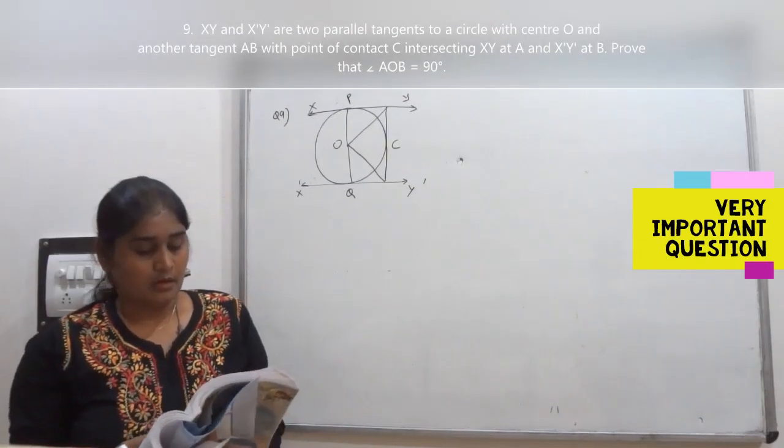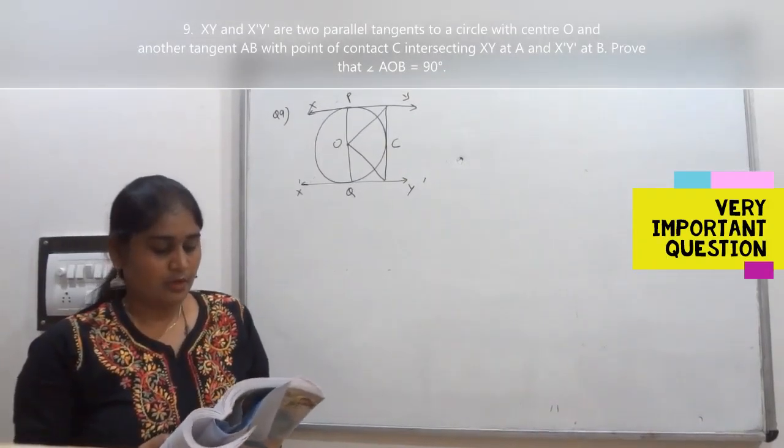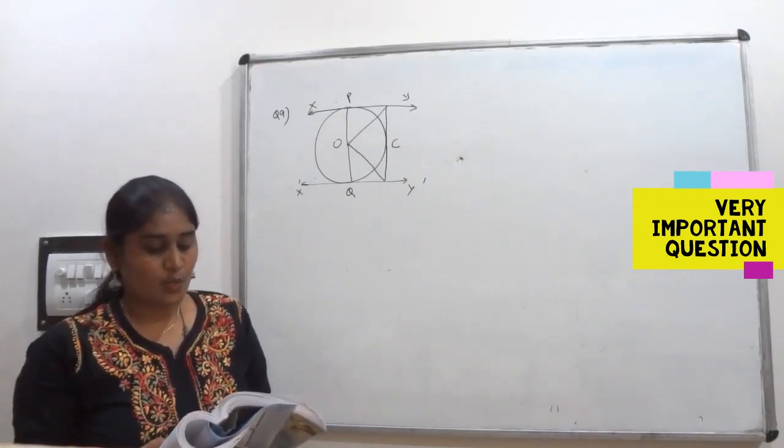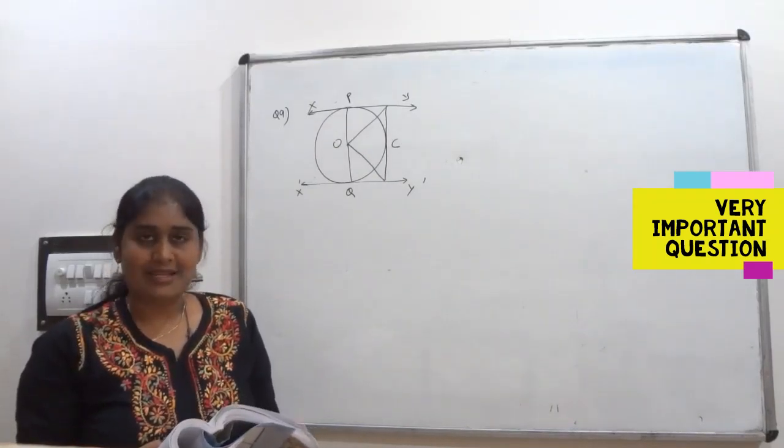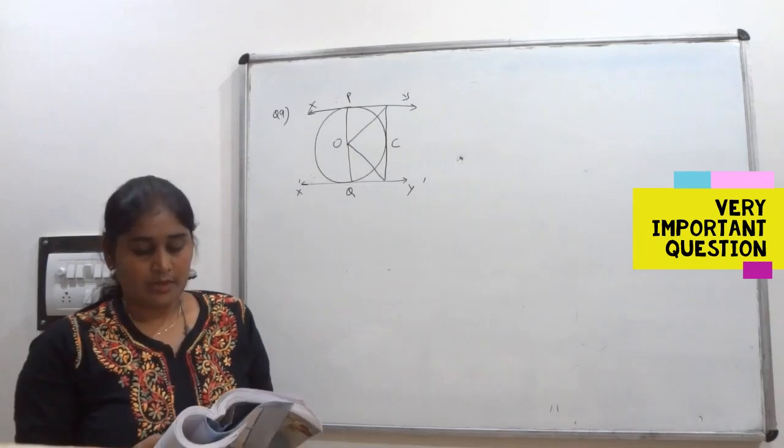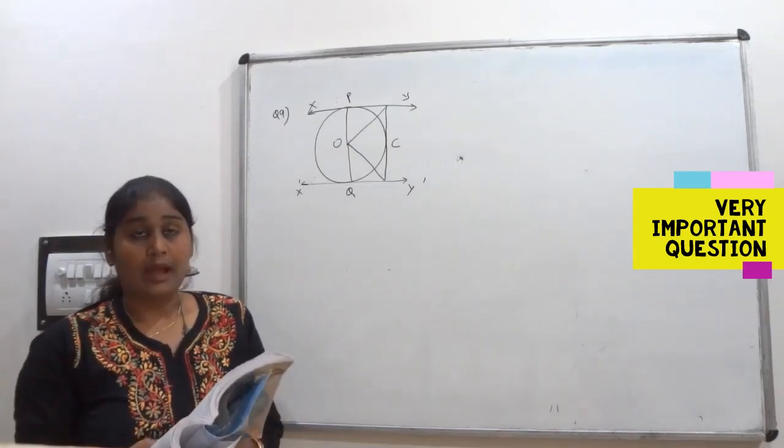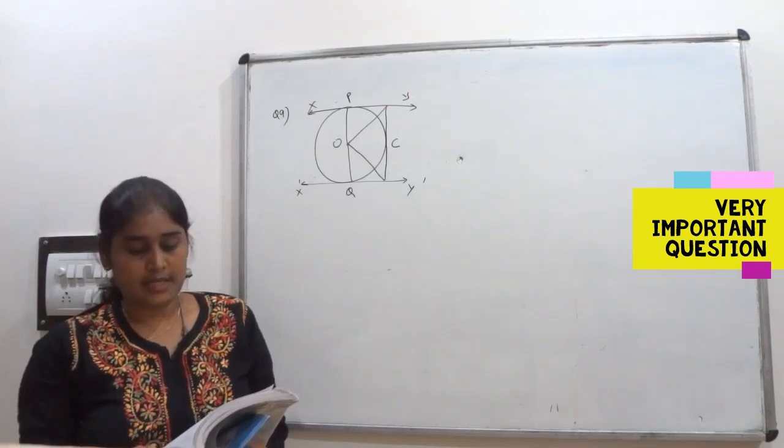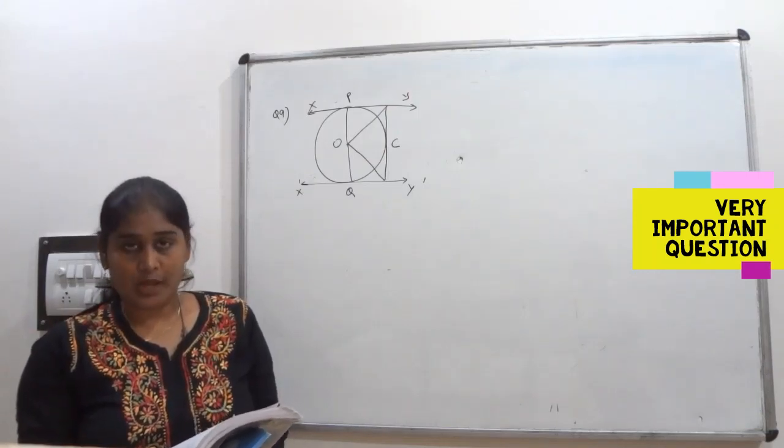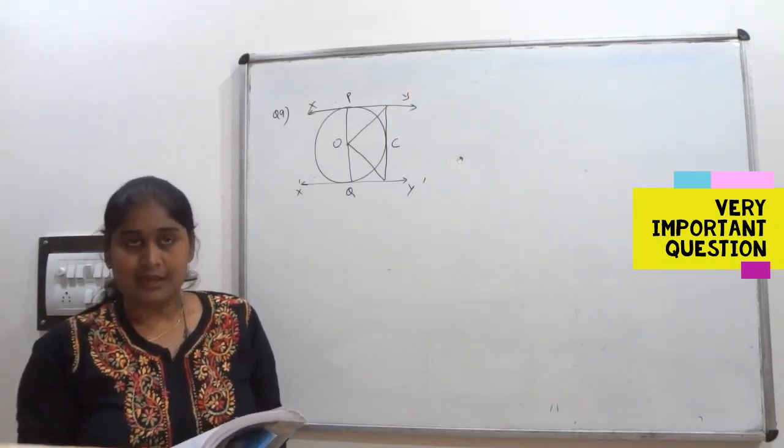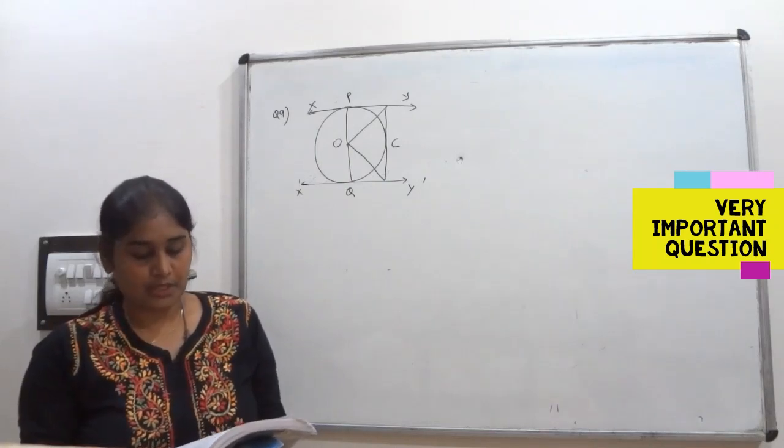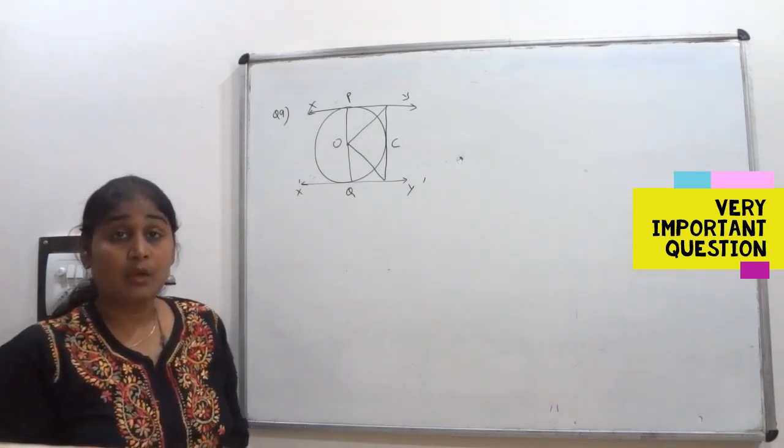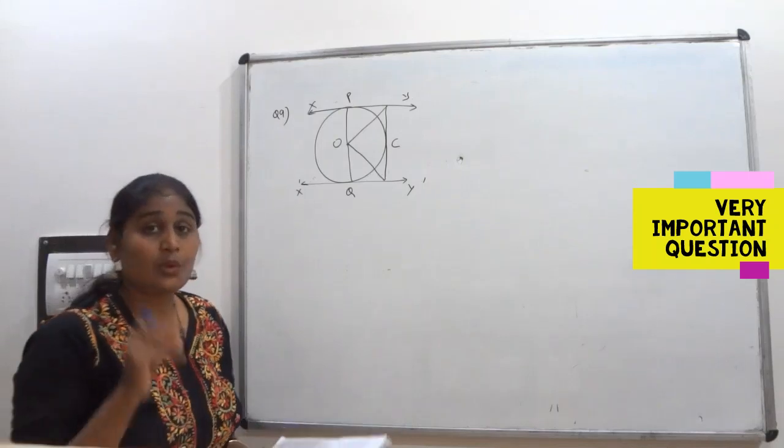Question number 9. In the given figure, XY and X'Y' are two parallel tangents to a circle with center O, and another tangent AB with point of contact C intersecting XY at point A and X'Y' at point B. Prove that angle AOB is equal to 90 degrees.